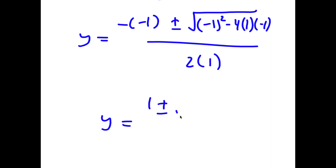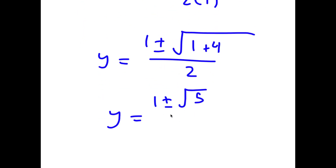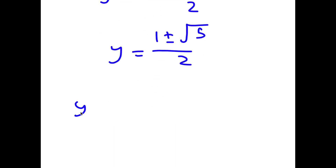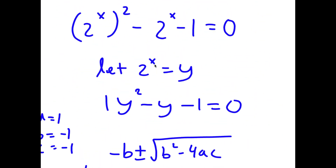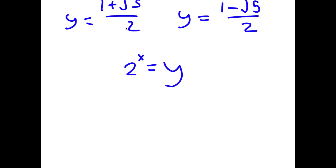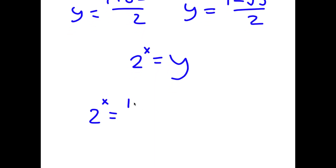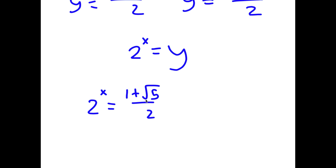This simplifies to 1 plus or minus the square root of 1 plus 4, which is the square root of 5, all over 2. So y is equal to 1 plus the square root of 5 over 2, or y equals 1 minus the square root of 5 over 2. Now remember we set 2 to the power of x equal to y, so we have two values of y. First, 2 to the power of x is equal to 1 plus the square root of 5 over 2.